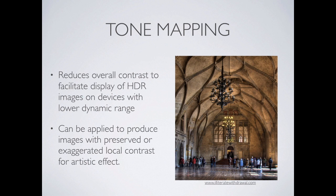A high dynamic range image by itself doesn't actually show us what the scene looks like as if our eyes were looking at it. We have to apply something called tone mapping on top of the image to make the final image look like what we see in a particular scene. This reduces the overall contrast to facilitate display of the high dynamic range within a lower dynamic range device — your monitor, a print, or the projector.